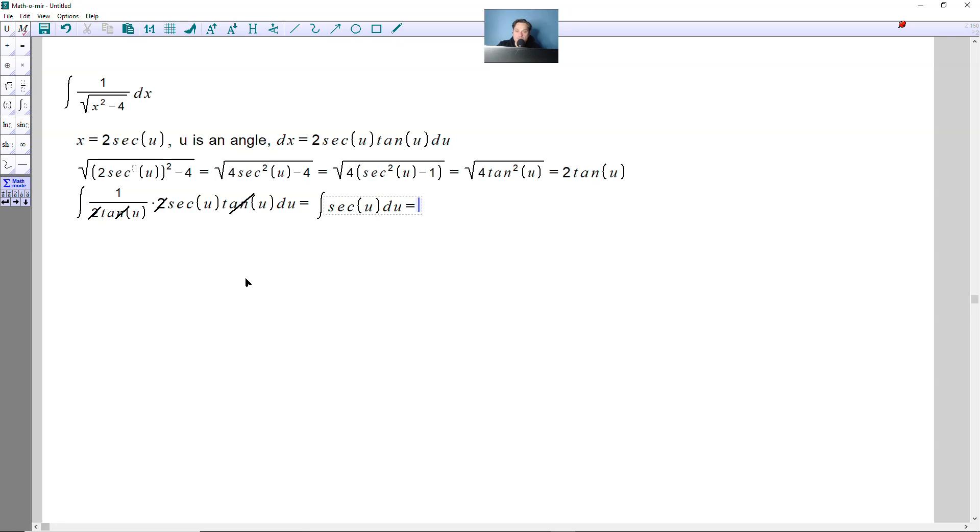And then anti-differentiating that will give us ln of the absolute value of secant of u plus tangent of u, and then plus c. This antiderivative is often developed in other contexts. Here we're just going to take it at face value that this is the correct antiderivative.